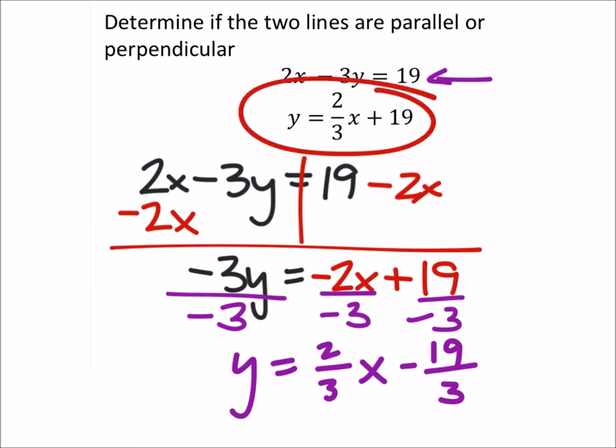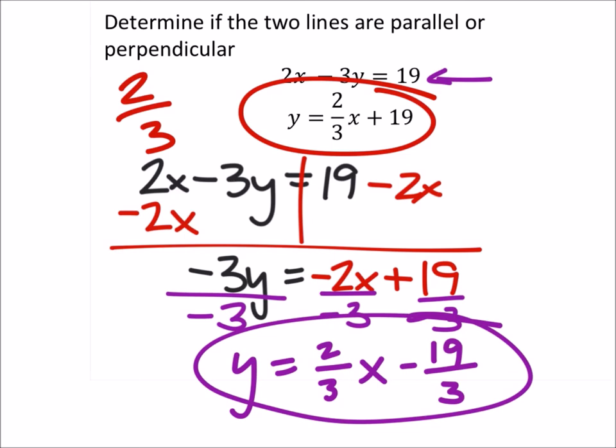What was the slope on this one? 2 thirds. 2 thirds, right? What's the slope on this one? 2 thirds. Well, they're certainly not opposite reciprocals. So what is it? Parallel. Parallel. There we go.